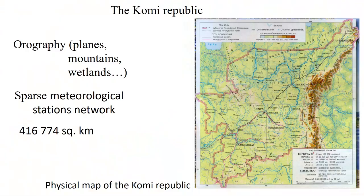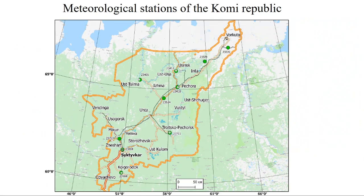This territory is over 416,000 square kilometers — a very large area — but it has a sparse meteorological station network with only 10 stations providing daily temperature and precipitation data. The USSR climate reference book suggests one meteorological station per 100 square kilometers, but with only 10 stations here, coverage is roughly 40,000 square kilometers per station, which is not ideal.